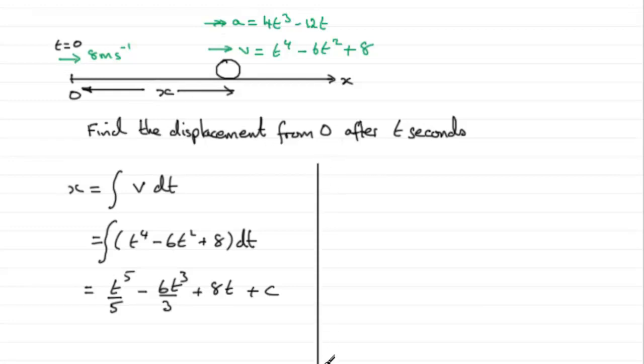So we can use that information then, that when t equals 0, the displacement x equals 0. And we can substitute that into this equation here to get what c is. So therefore we have 0 for x equals, and if you put t equal to 0 in each of these terms here, that's going to make them go to 0. So c would equal 0.